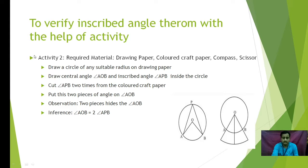Let us go to the next activity. Now this you have to do on your own. For that, I am going to provide you drawing paper, colored scrap paper, compass, and scissor. With the help of this material, we have to do this activity. Now students, take paper in your hand. First you have to draw a circle of any suitable radius on drawing paper. Have you done it? Now, next you have to draw central angle AOB and inscribed angle APB inside the circle.